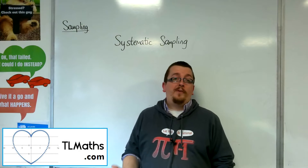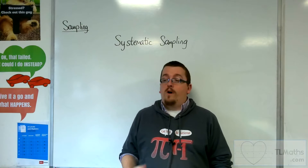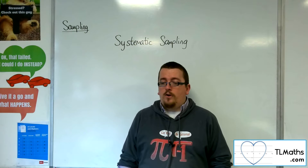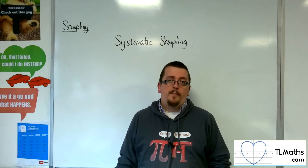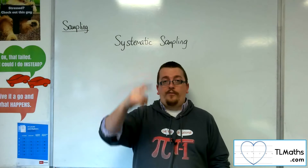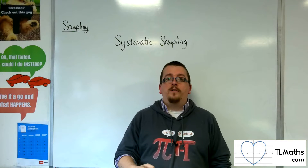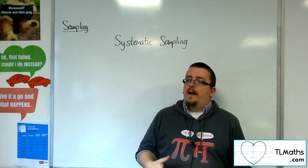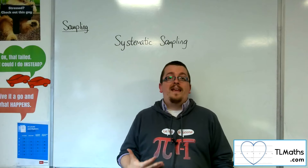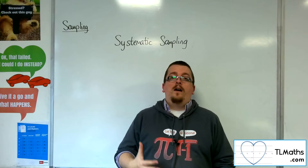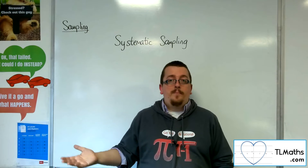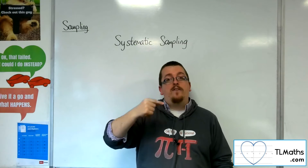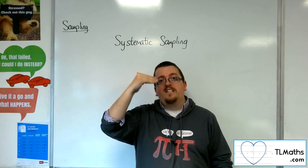So let's say I want to perform systematic sampling rather than simple random sampling. I've got 100 employees in a company and I list them in alphabetical order by surname and number them from 1 to 100. Then what I could do is pick every 10th person, if I needed to pick 10 people from the 100. That is systematic sampling — going through systematically.